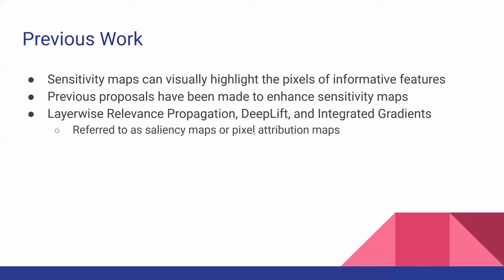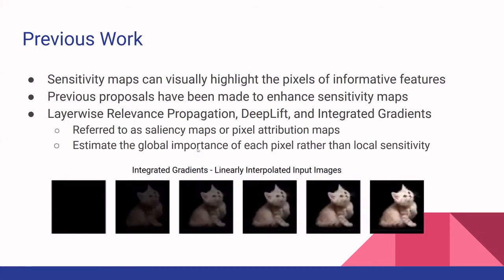These methods are also referred to as saliency maps, and they estimate the global importance of each pixel rather than local sensitivity. For how integrated gradients work, they linearly interpolate an image using a certain number of steps that you specify. You have a baseline — a black image — and then you have the final image.